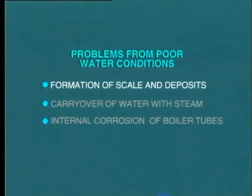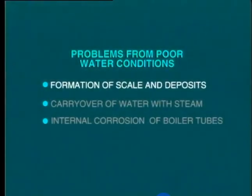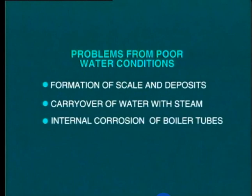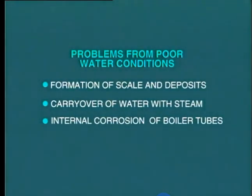So what is it exactly that we are protecting the boiler against? What are the problems that can arise as a result of feeding impure water into the boiler? The principal problems arising from poor water conditioning are: the formation of scale and deposits inside boiler tubes, the carryover of water with the steam, and internal corrosion causing wastage of boiler tubes.